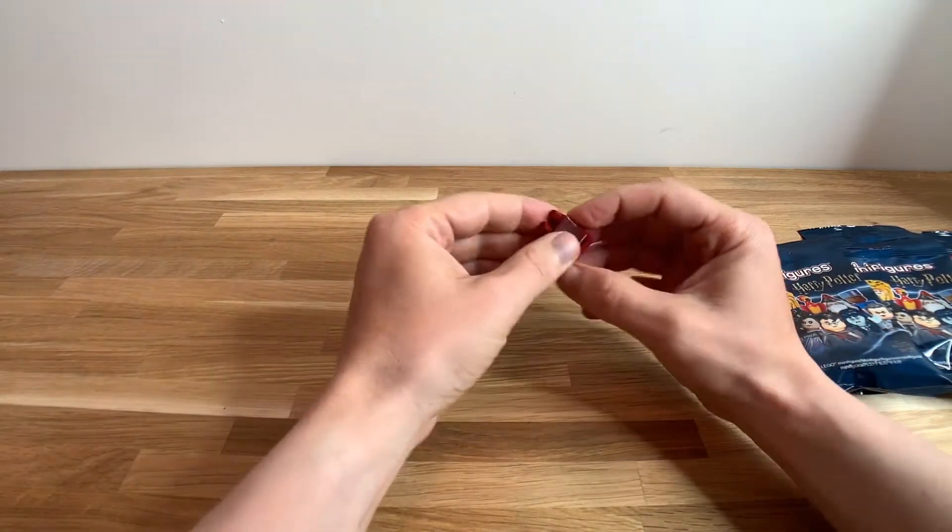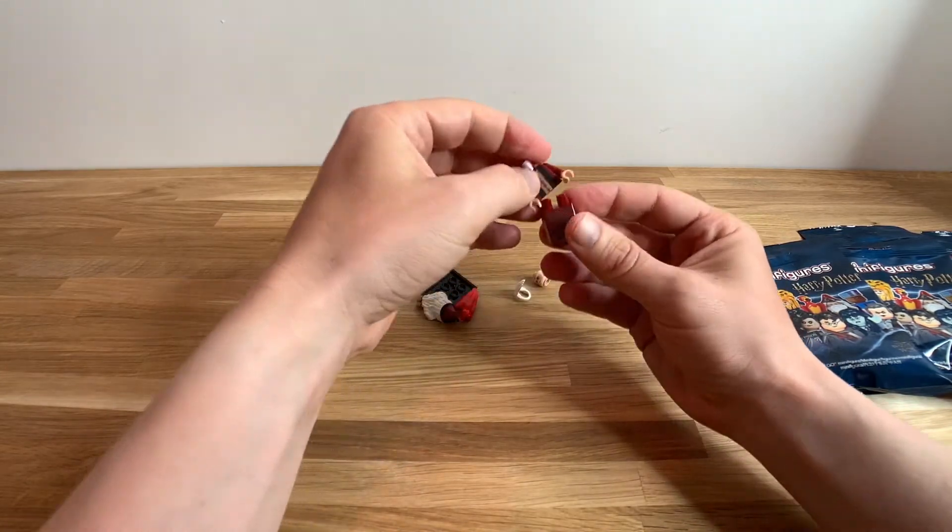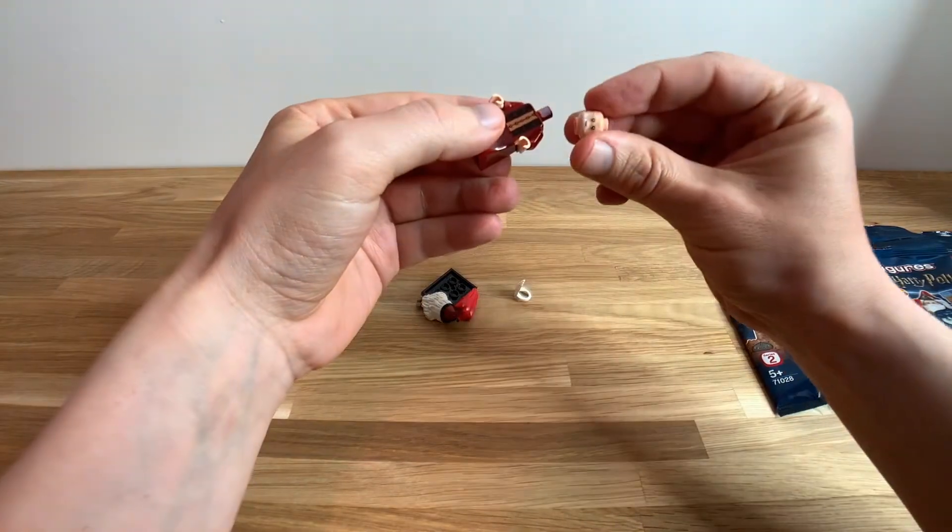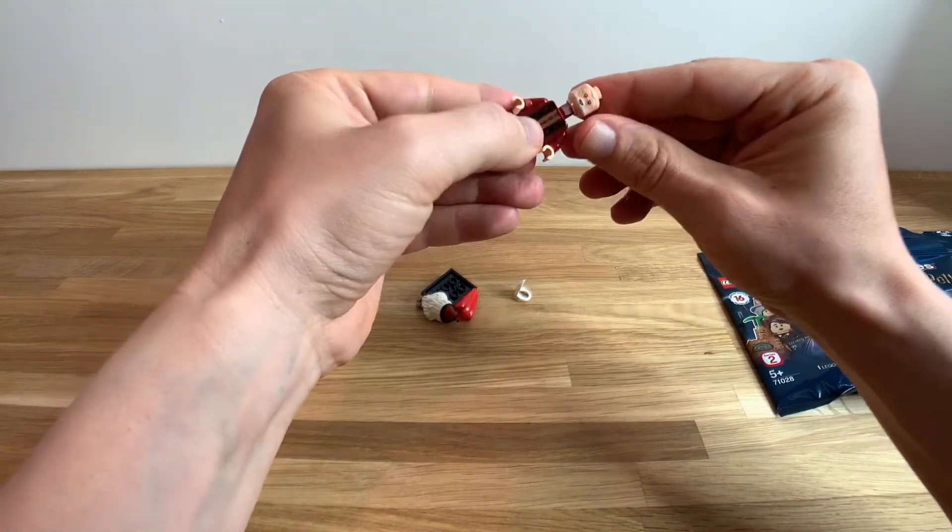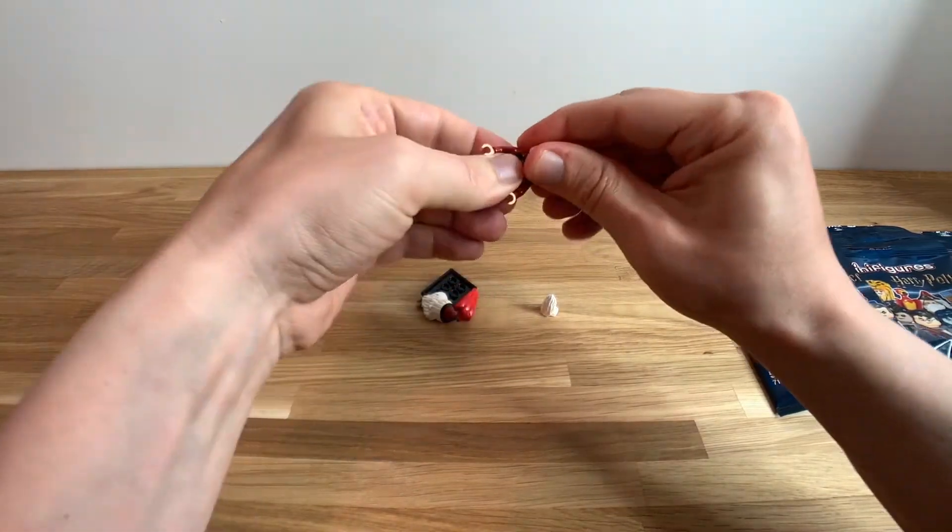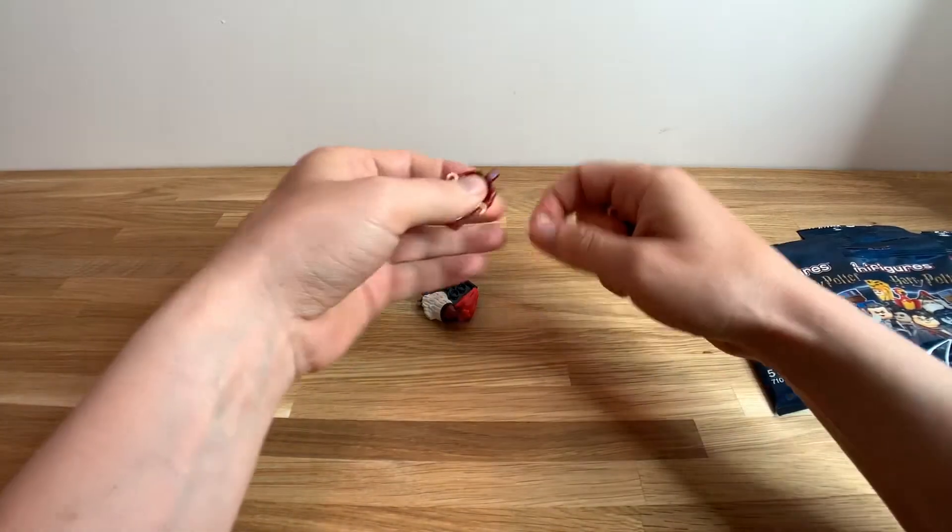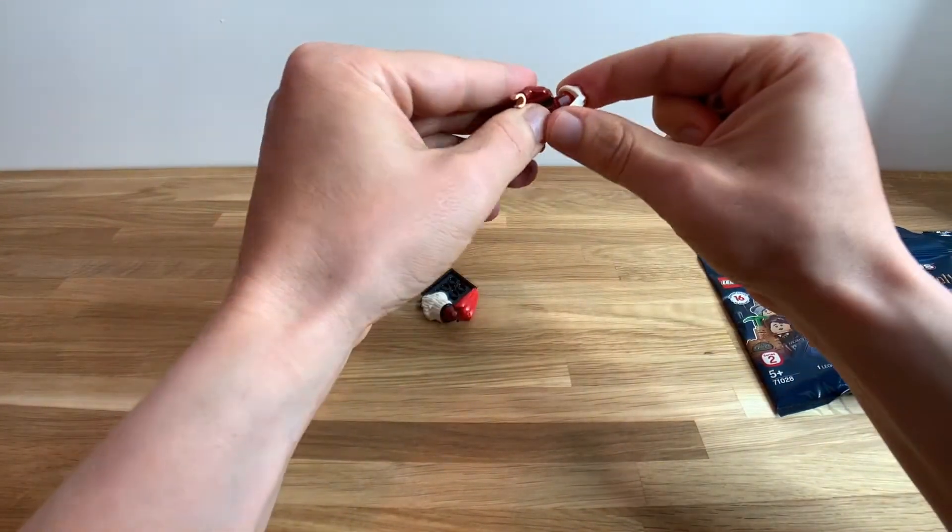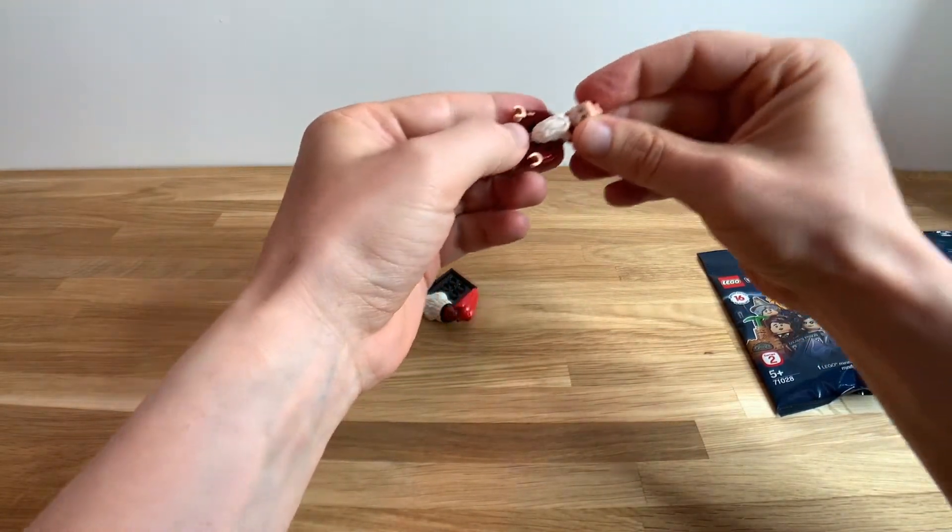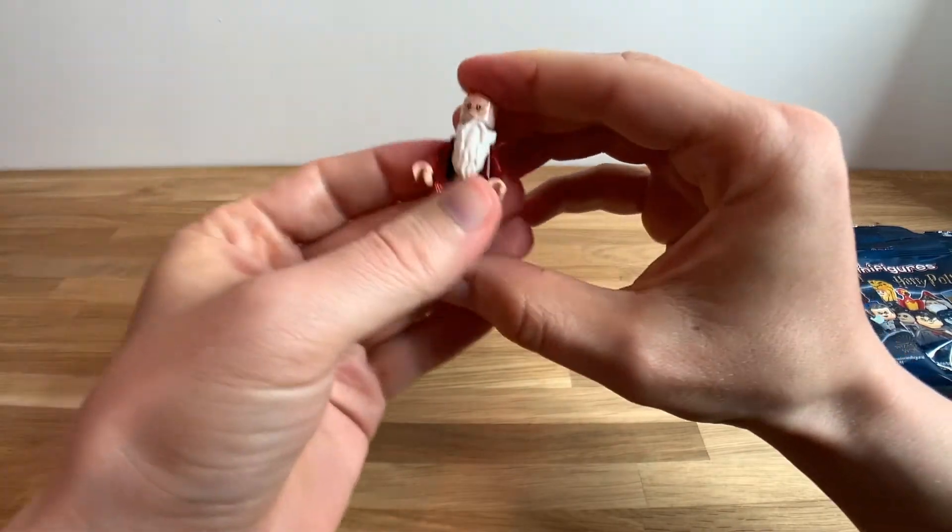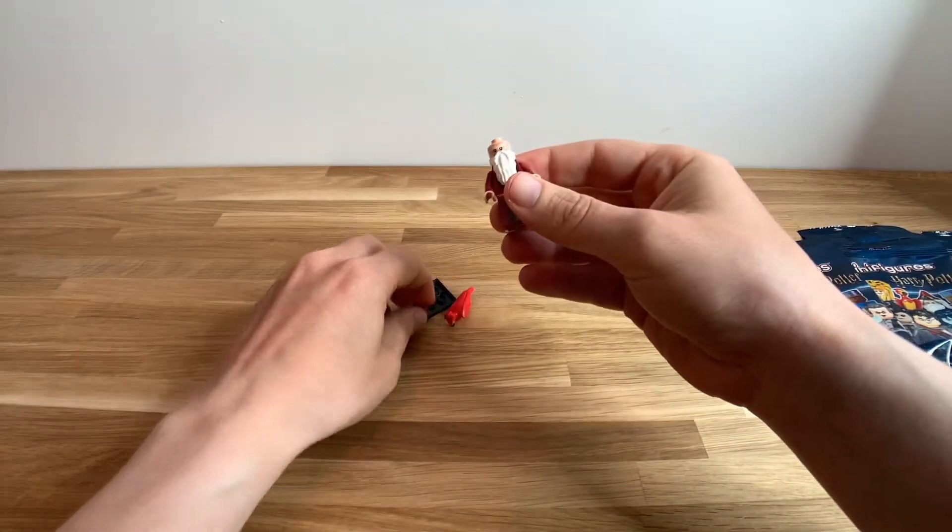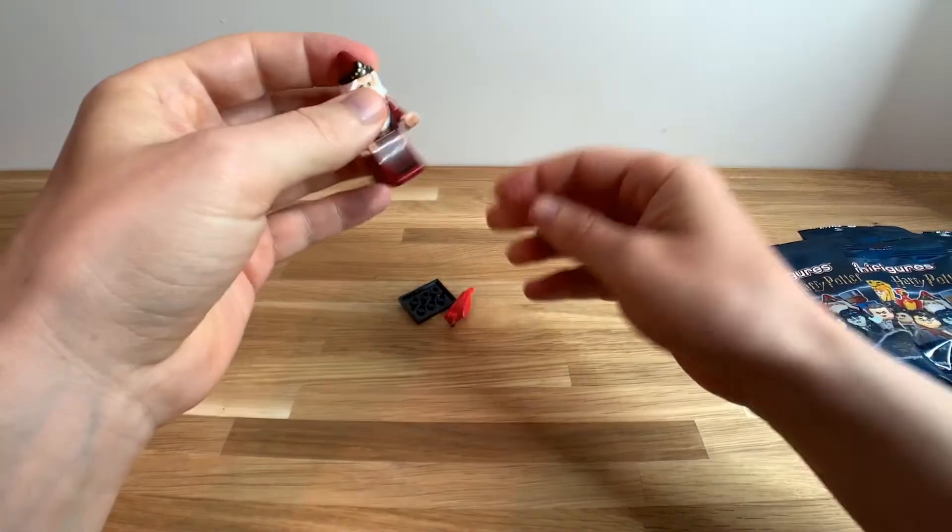So the first one we have is a Dumbledore. Oh, he actually has some extra piece that gives him a much longer and more realistic beard. And a wizard hat with long white hair attached to the back.